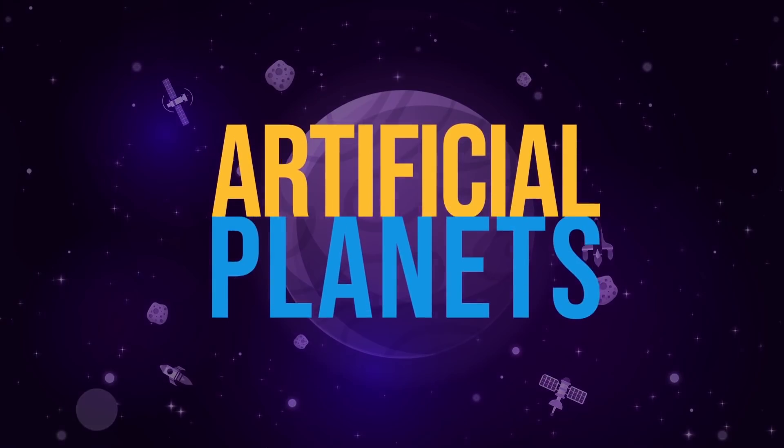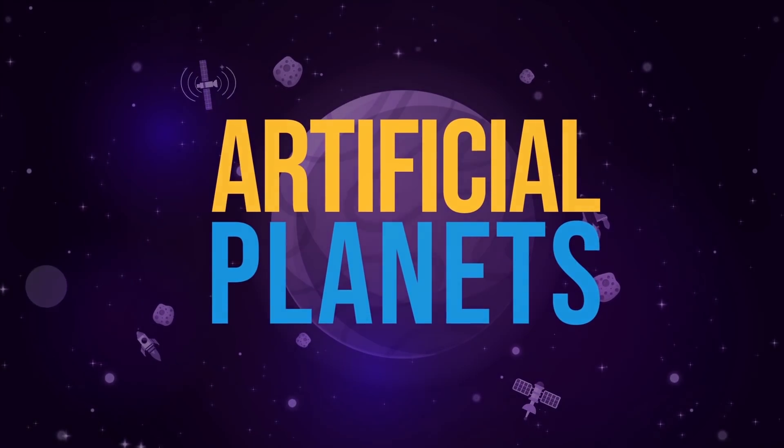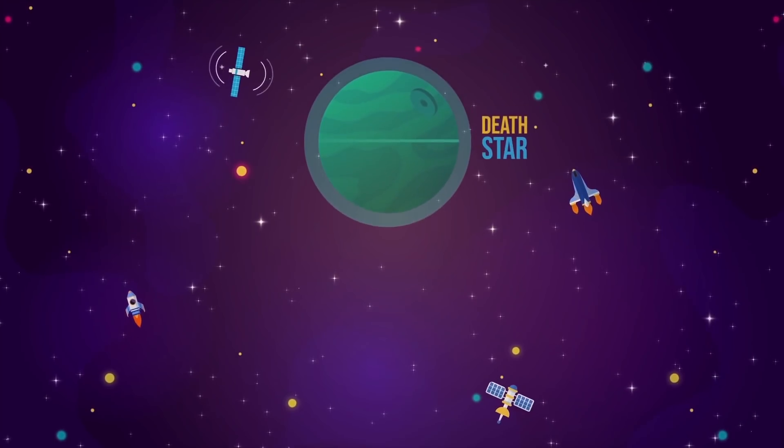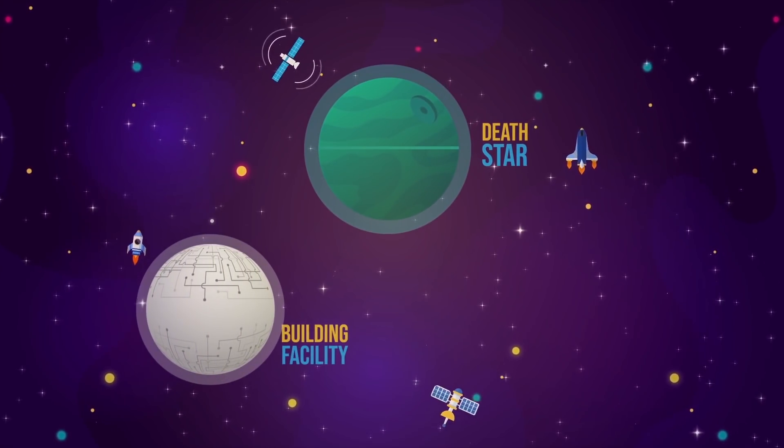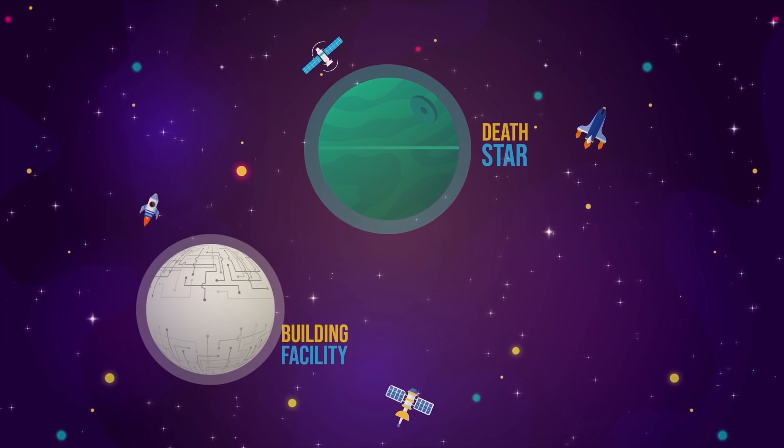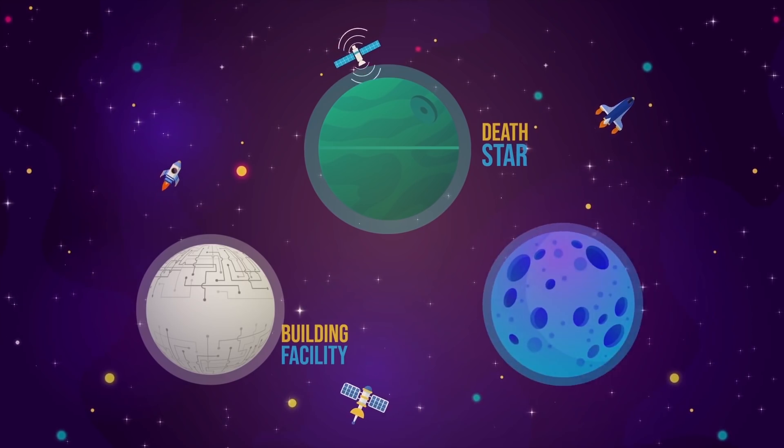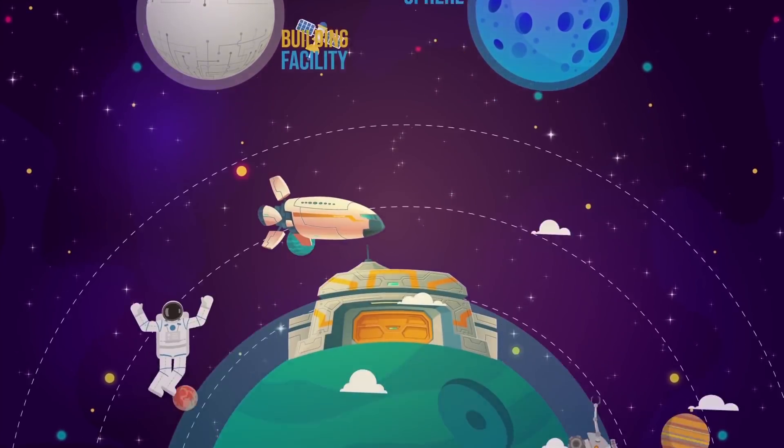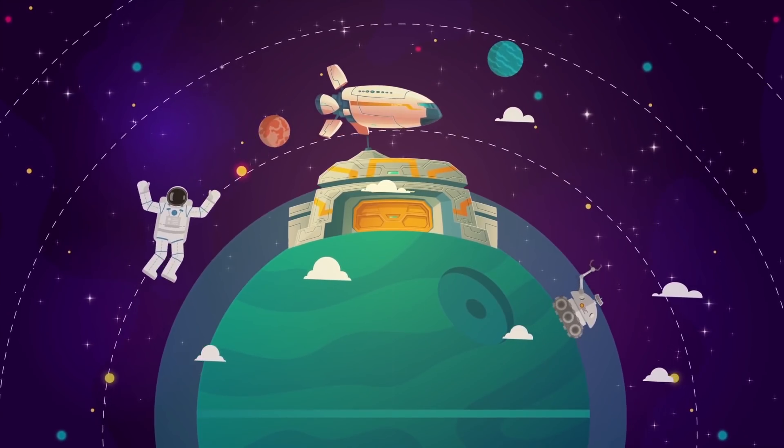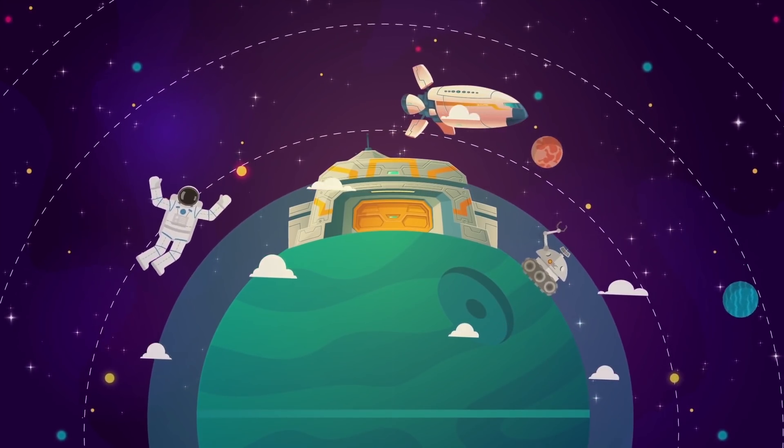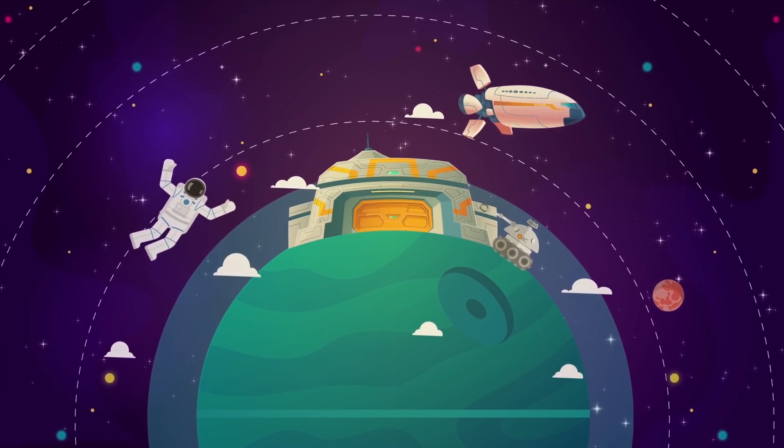We see artificial planet-sized objects quite often in science fiction, from the Death Star in Star Wars, the planet-building facility in Hitchhiker's Guide to the Galaxy, and even far larger objects like a Dyson Sphere. The species shown being capable of building such creations are incredibly advanced, but what exactly would it take to actually build one?